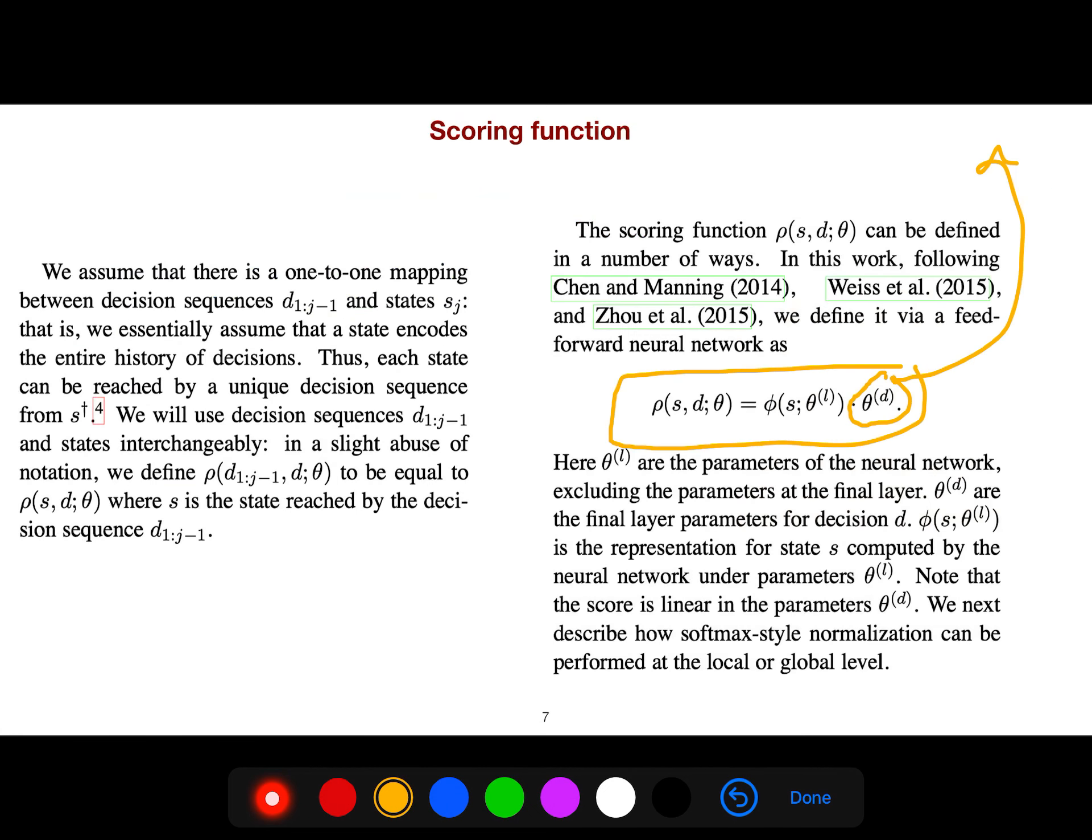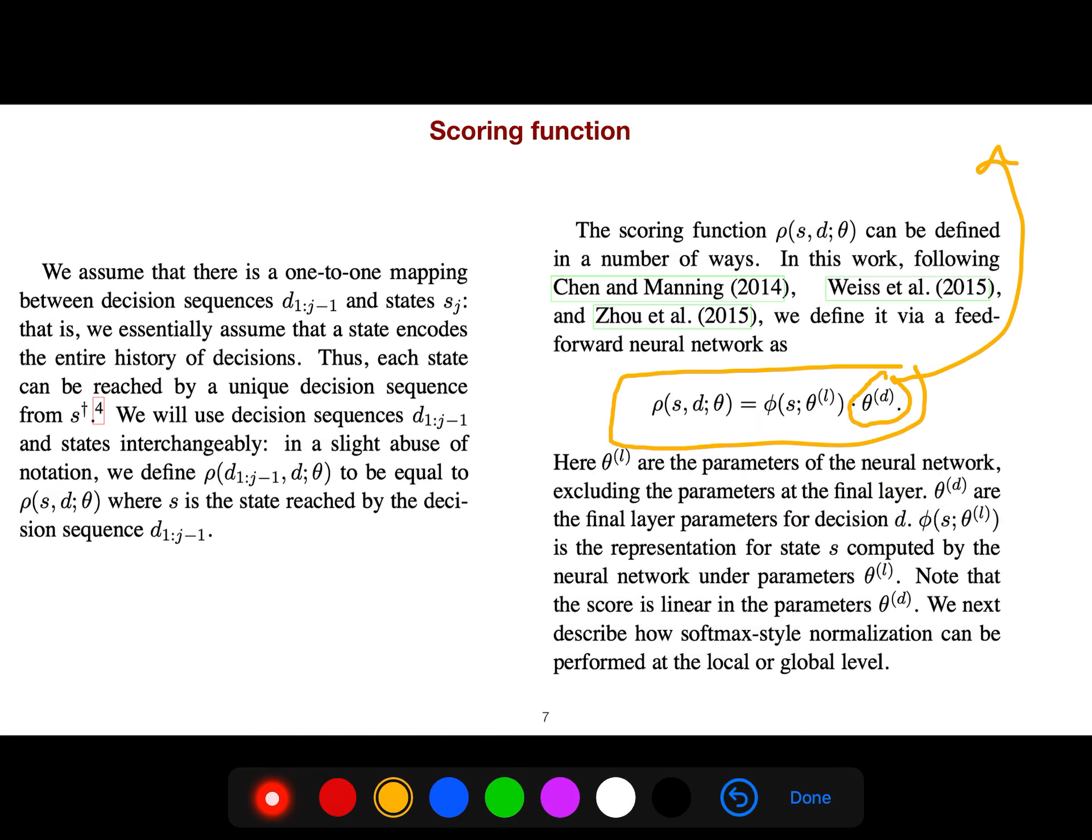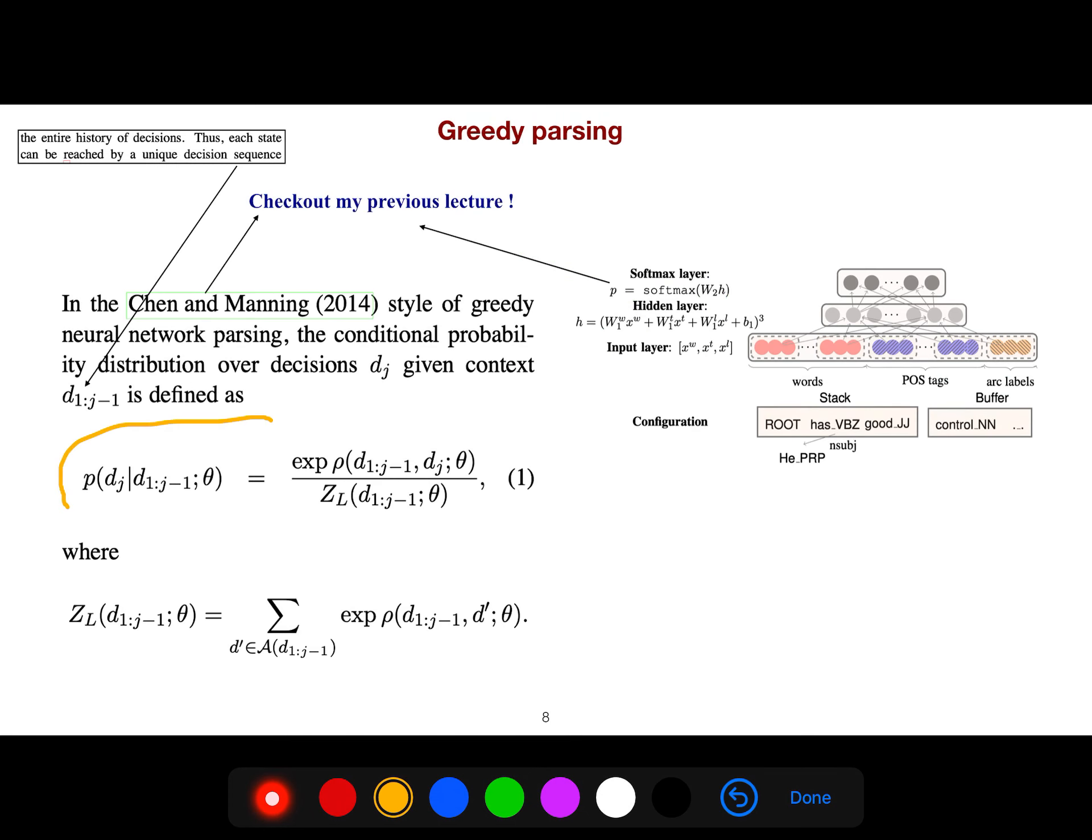In the previous lecture, Christopher Manning's 2014 article, we were using just a greedy approach. We had states, and after a sequence of decisions we reach some state. These states represent all the sequence of actions before.